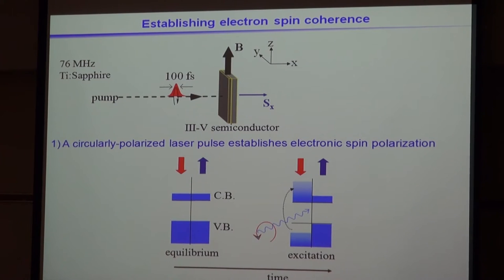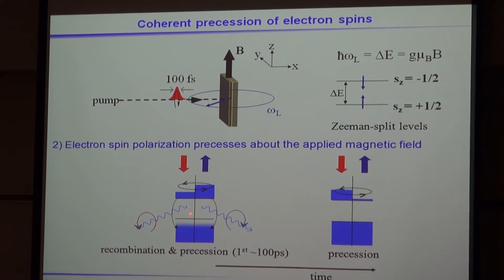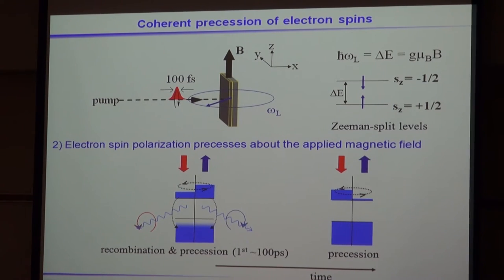We use 100-femtosecond or few-picosecond pulses. We first use a circularly polarized pump beam to produce electron spin polarization. In our measurements, we typically start with an n-doped sample, so there are already some electrons occupying the conduction band. We do our spin-dependent optical excitation, holes are left behind in the valence band, and there's recombination from the bottom of the conduction band. Because we started with electrons in the conduction band, even after that recombination we'll still be left with some spin polarization, and we can measure spin dynamics spanning much longer than the radiative lifetime.